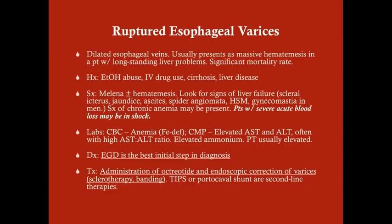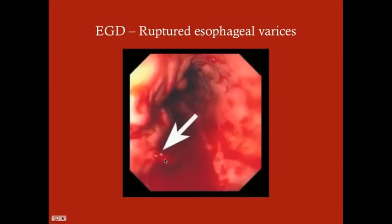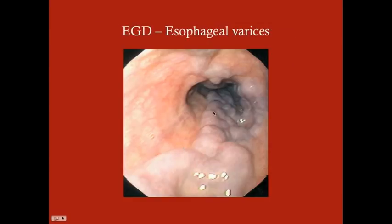Endoscopic correction is effective 90% of the time. Here's an image of a ruptured esophageal varix — you can see the distended veins and where the blood is coming out. For unruptured varices like these, which may never have ruptured, beta blockers would be appropriate to reduce rupture risk.